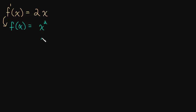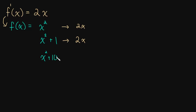But there's a catch, because if we take the derivative of x squared plus 1, we still get 2x. So the derivative of x squared plus 1 still goes to 2x — take these arrows to mean the derivative. If we take the derivative of x squared plus 100, that still goes to 2x, because when we take the derivative, that constant goes away. x squared minus pi, when we take the derivative, that still goes to 2x.